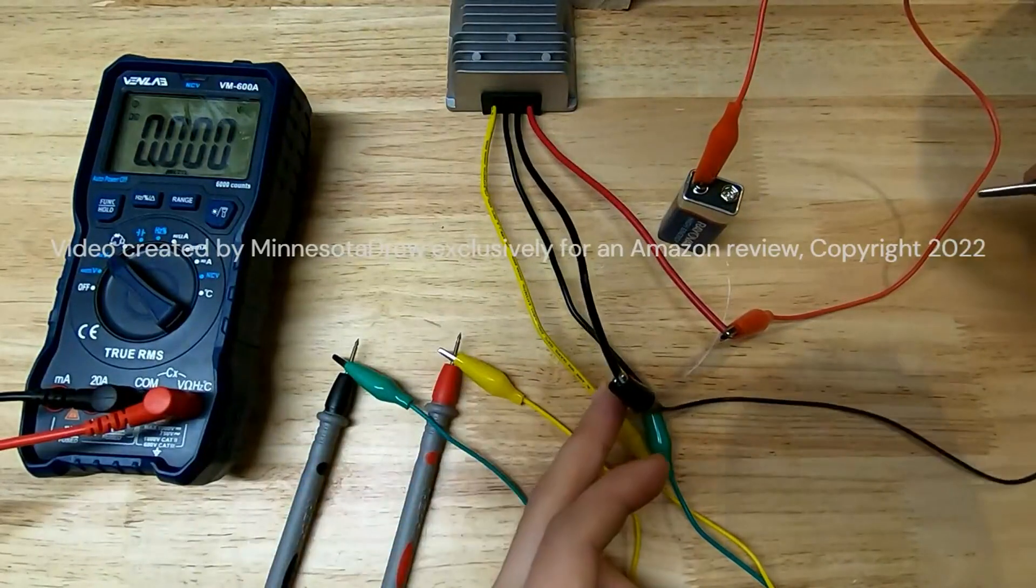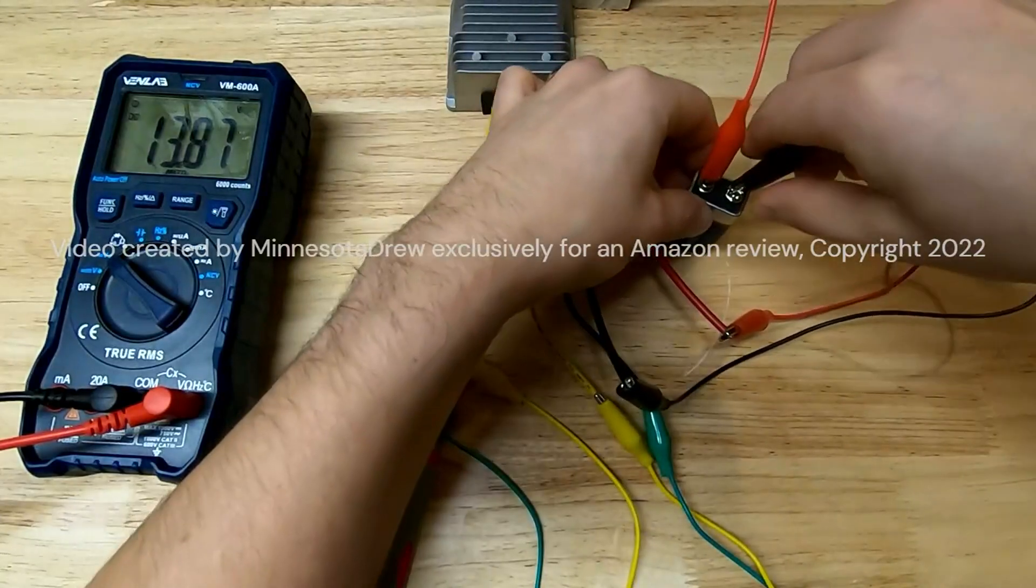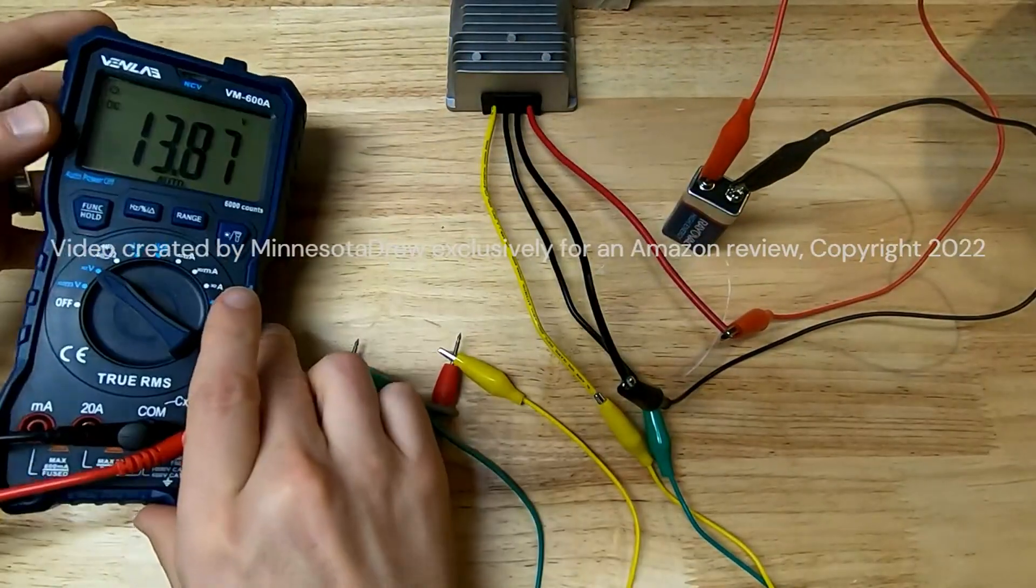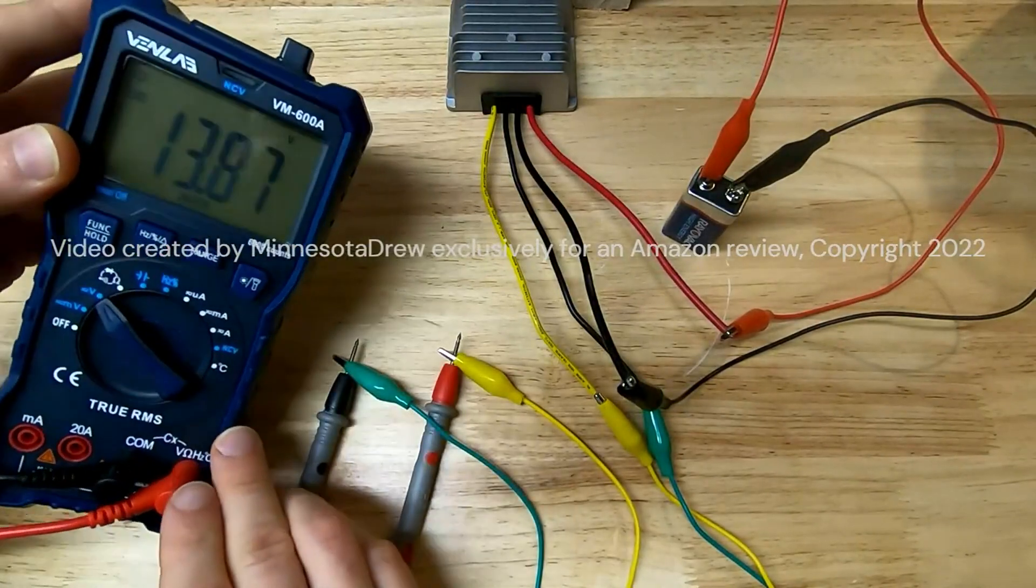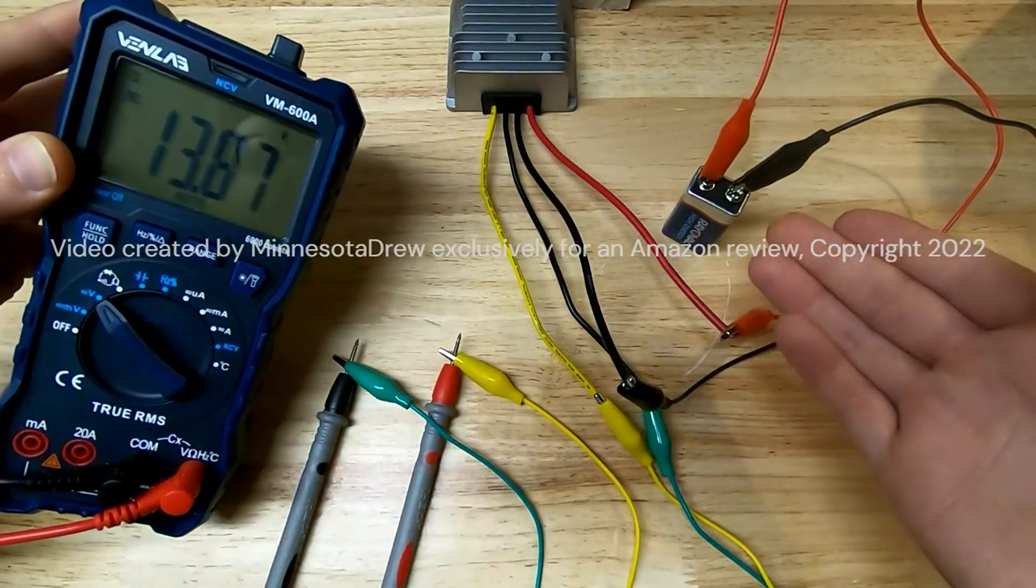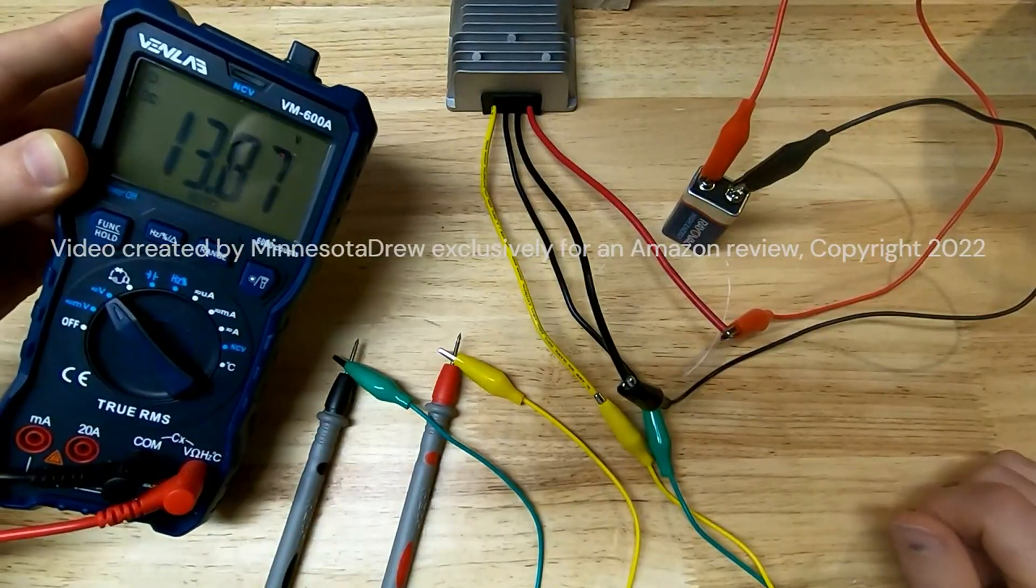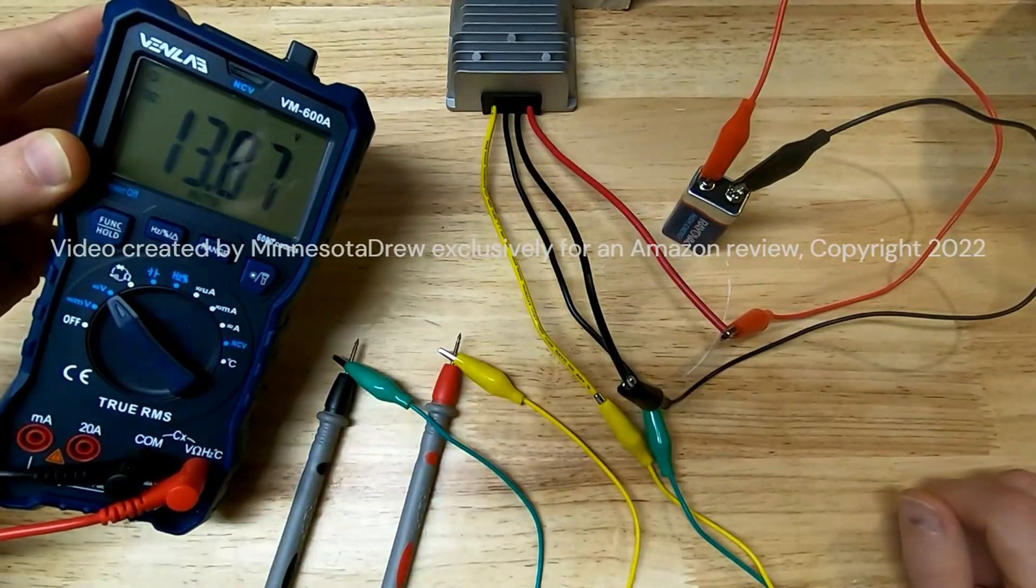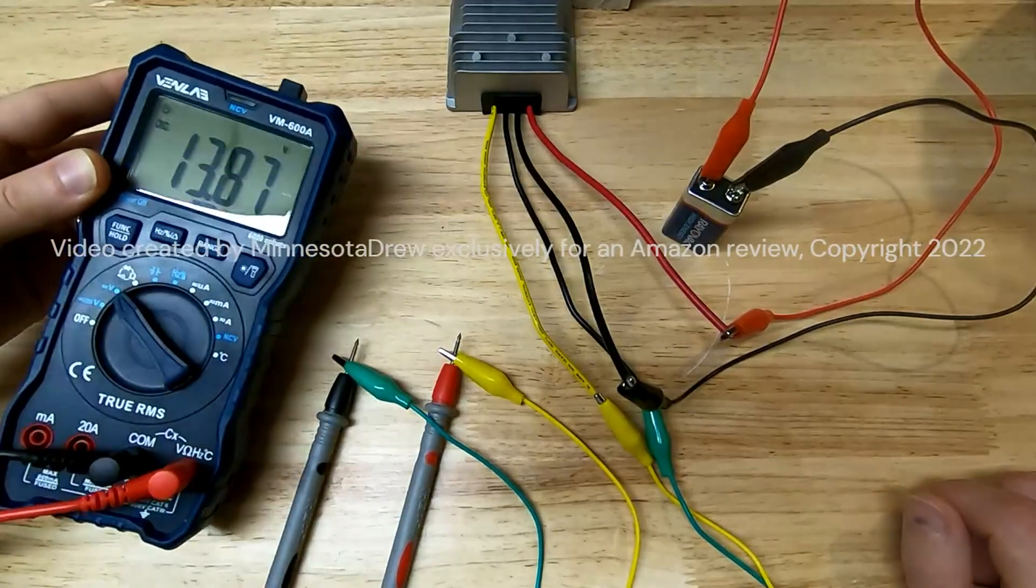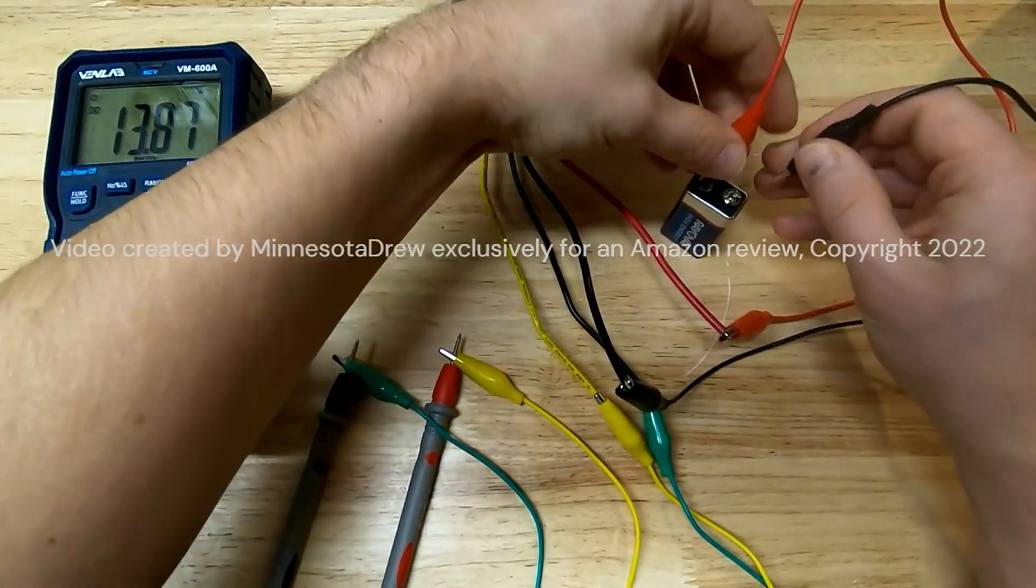We should be able to hook these up to our 9 volt battery and see 13.8 volts out if the device works as advertised down to that range. Get a better grip on the battery there. And here you are. Not that you could really use much current in this scenario. This little battery is not going to provide much in the way of amps, more like milliamps, but it does indeed put out actually just a fuzz over 13.8 volts on a 9 volt household battery.